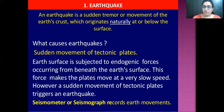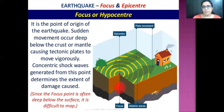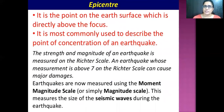An earthquake is recorded on a seismograph or seismometer. The focus, or hypocenter, is the point deep below the surface — it is the point of origin of the earthquake. The epicenter is the point on the earth's surface directly above the focus, and it is most commonly used to describe the point of concentration of an earthquake. Earthquakes are measured using the moment magnitude scale, which measures the size of the seismic waves during an earthquake on a scale called the Richter scale.